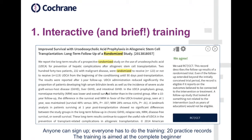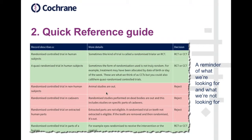The first feature is that we want anyone who wants to, to be able to join up and help us identify trials. There is a compulsory training module made up of 20 practice records that take you through the main aspects of what we're looking for and what to reject. We also have a quick reference guide to act as a reminder of what's eligible and what should be rejected.